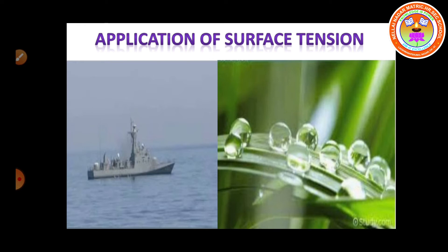The first picture shows water or rain drops, which take a spherical shape. As we already discussed, due to surface tension, for a given volume, the surface area of the sphere is the minimum. This is the reason for liquid drops to occur in spherical shape.